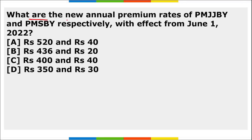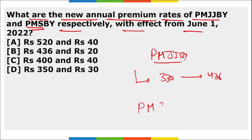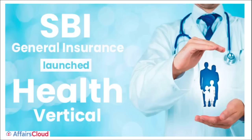The new annual premium rates of Pradhan Mantri Jeevan Jyoti Bima Yojana (PMJJBY) and Pradhan Mantri Suraksha Bima Yojana (PMSBY) with effect from 1st June 2022 are as follows: PMJJBY has been increased from Rs. 330 to Rs. 436 per annum, and PMSBY has been increased from Rs. 12 to Rs. 20 per annum.